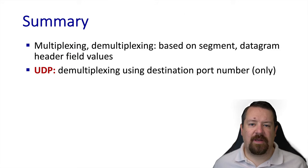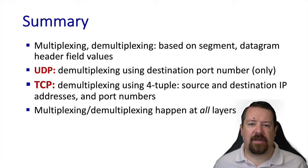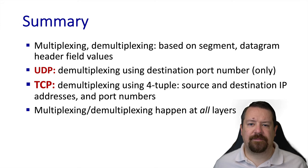Let's summarize. UDP demultiplexing happens based on the destination port number only, whereas TCP demultiplexing happens based on the 4-tuple including source and destination IP addresses and port numbers. Other layers have multiplexing and demultiplexing processes as well — for example, IP addresses are the identifiers used at the network layer. That wraps up our overview of multiplexing and demultiplexing. In the next video, we'll look at some specifics of the UDP transport protocol. See you then!